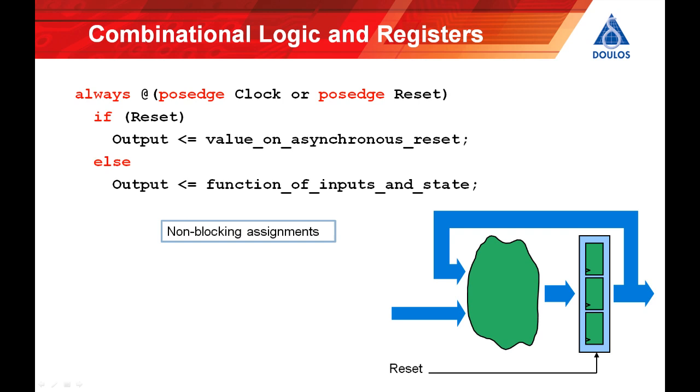There are good and bad ways to infer registers and here we can see the coding style that's pretty much universally recognized as being the best practice. The variables that represent registers are assigned using non-blocking assignments and the always block is made sensitive to the clock on the first line of the always along with any asynchronous control signals.